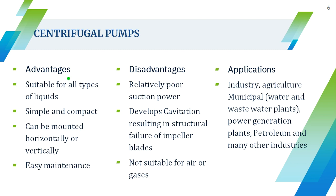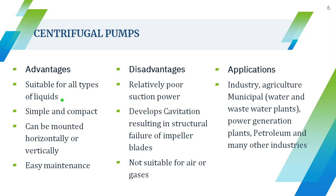The major advantages of the centrifugal pump are: it is suitable for all types of liquids — not only water, but also oil and fluids of different viscosities, and it is widely used in machines for lubrication purposes. It is also very simple and compact, can be mounted either horizontally or vertically, and is very easy to maintain with not much maintenance required.